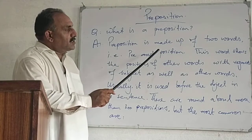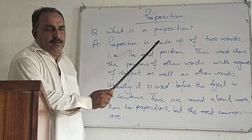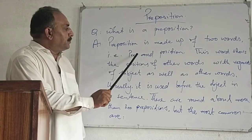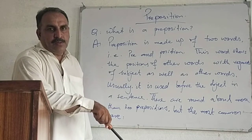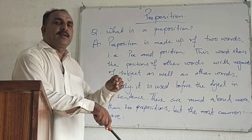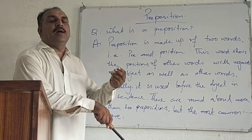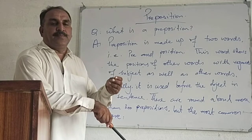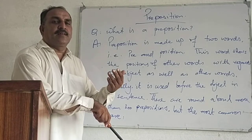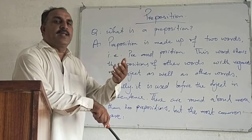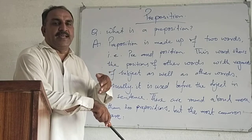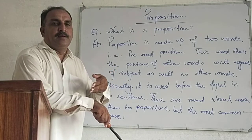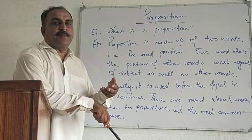Preposition is made up of two words: pre and position. Pre means prior, meaning before. Position means a place. So preposition means before the place — placed prior to a position.